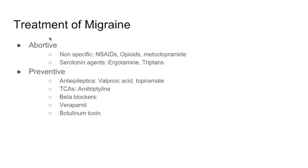Abortive treatment consists of nonspecific medications like NSAIDs, opioids, or metoclopramide, and specific agents that target serotonin like ergotamine or triptans. Preventative medications consist of antiepileptics, tricyclic antidepressants — specifically amitriptyline — beta blockers, specifically propranolol, verapamil, and you can also use botulinum toxin to prevent migraine headaches.